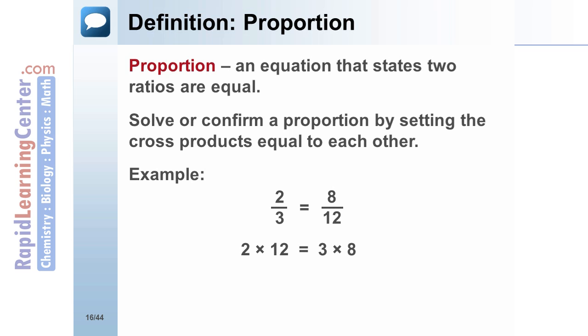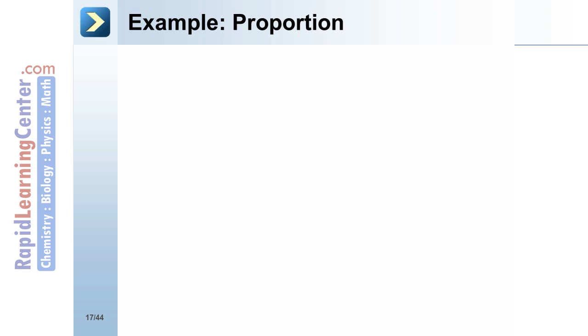to 12 is a proportion because 2 times 12 equals 3 times 8. Both cross products equal 24.